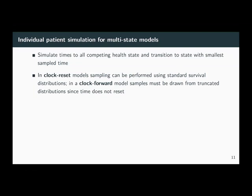In clock reset models, this is quite straightforward because we can just sample from standard survival distributions. In the clock forward context, it's a little more complicated because we need to sample from truncated distributions since time doesn't reset. For instance, if a patient enters a state at time two, we would sample from a distribution truncated at time two, which makes the computation a little more complex.